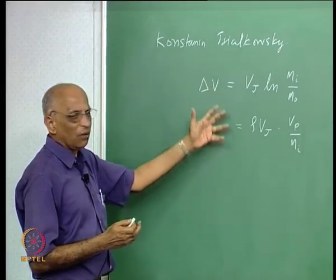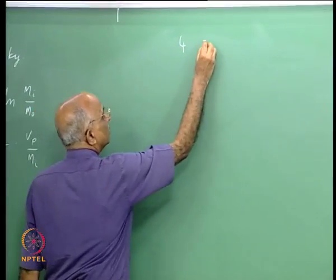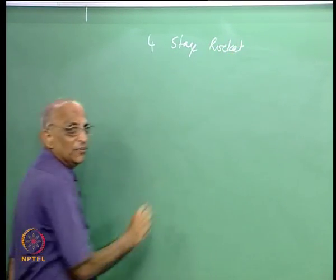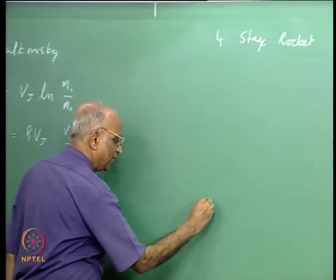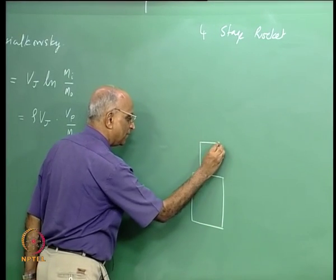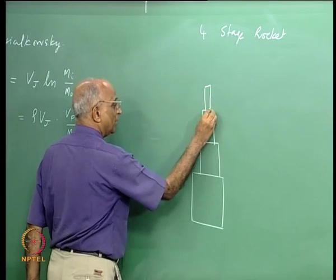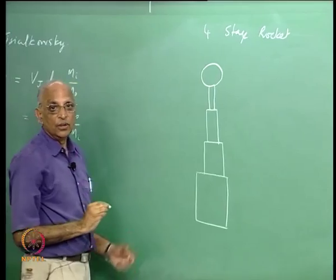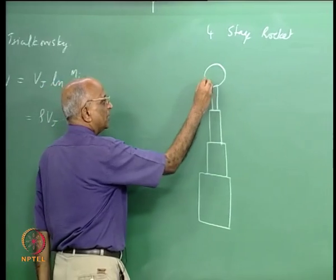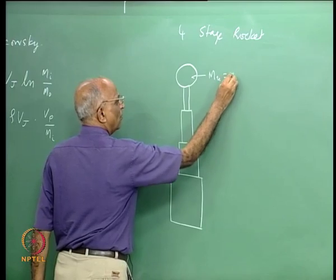Let us go ahead and solve one or two small problems. I take a problem of a four-stage rocket. We have a booster stage — the first — then the second stage, third stage, fourth stage, and on top sits the useful payload. Let me take a typical example where the useful mass is equal to 40 kg.